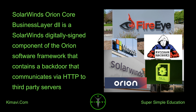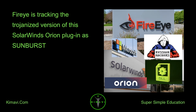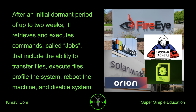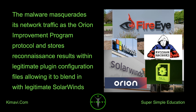The SolarWinds Core Business Layer DLL is a SolarWinds digitally signed component of the Orion software framework that contains a backdoor communicating via HTTP to third-party servers. FireEye is tracking the trojanized version of this SolarWinds plug-in as Sunburst. After an initial dormant period of up to two weeks, it retrieves and executes commands — called jobs — that include the ability to transfer files, execute files, profile the system, reboot the machine, and disable system services. The malware masquerades its network traffic as the Orion Improvement Program protocol and stores reconnaissance results within legitimate plug-in configuration files, allowing it to blend in with legitimate SolarWinds activity.